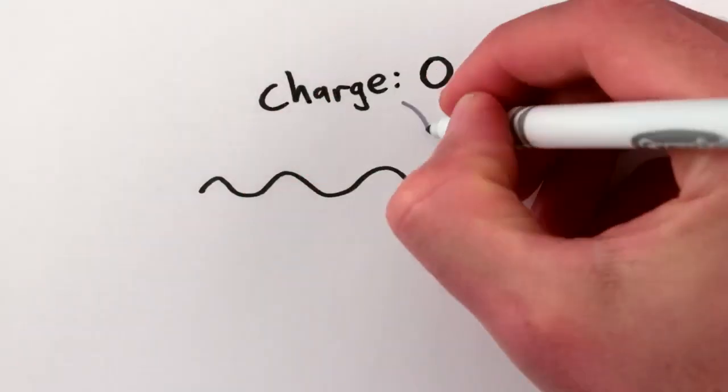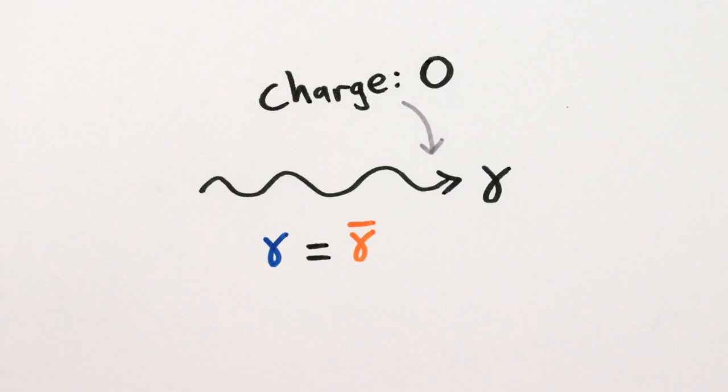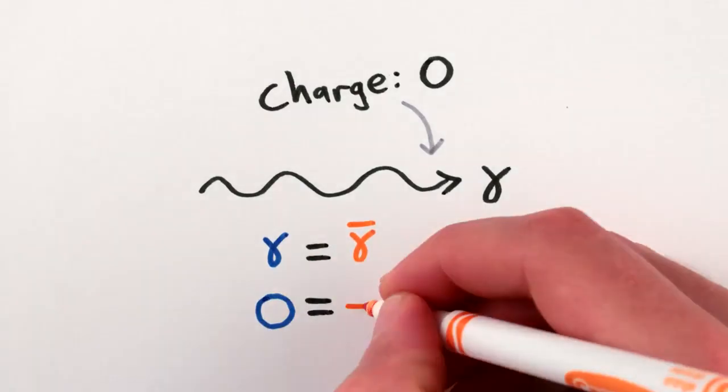Photons, incidentally, have zero charge and so are their own antiparticles, in the same way that zero is equal to negative zero.